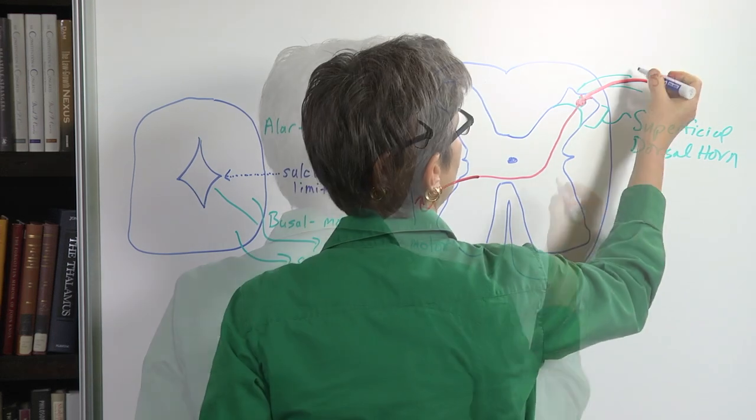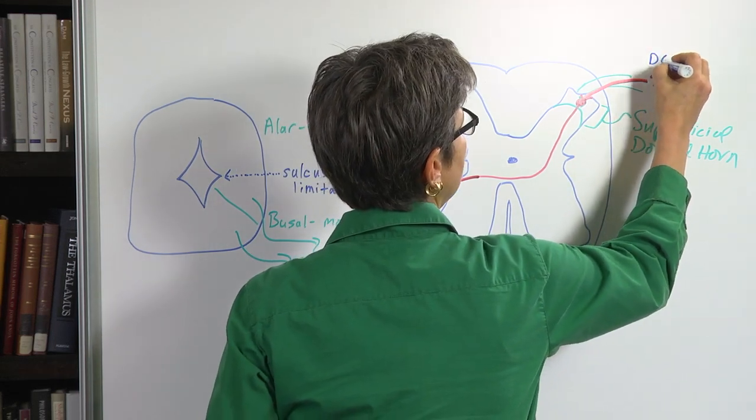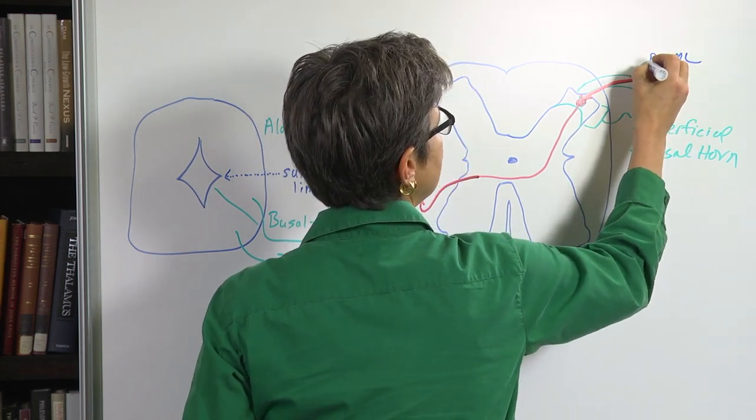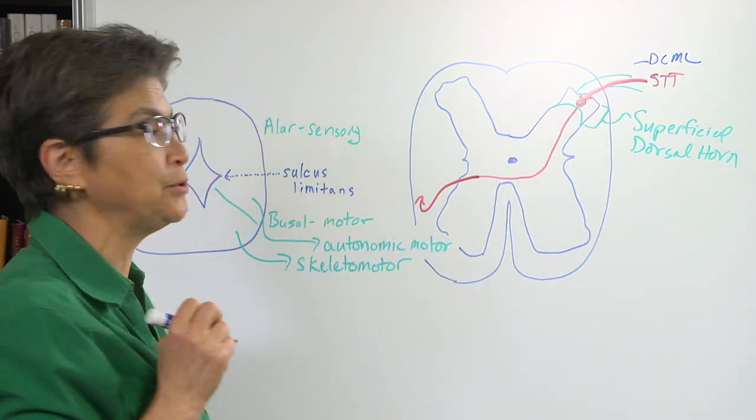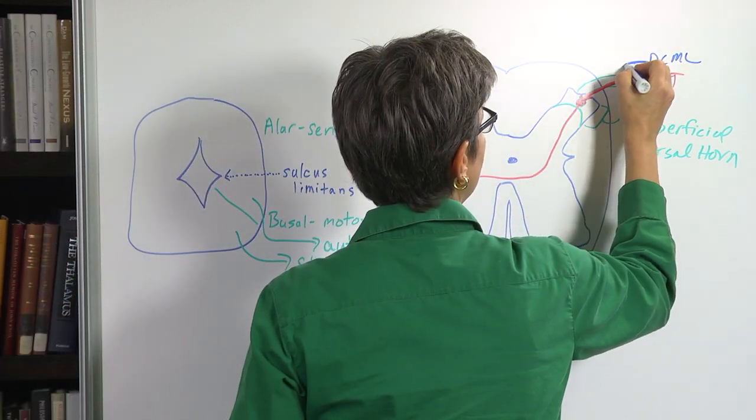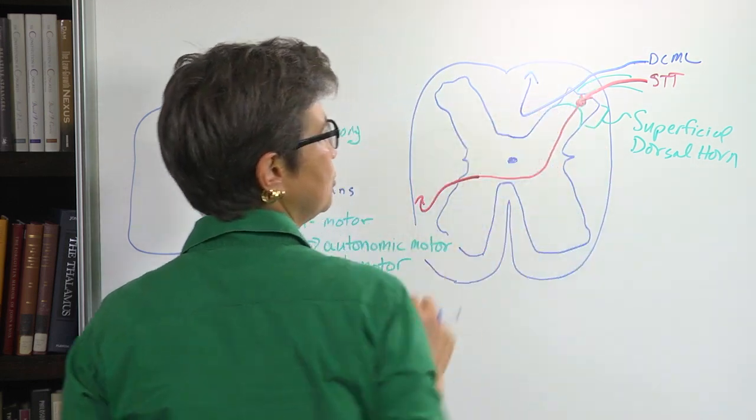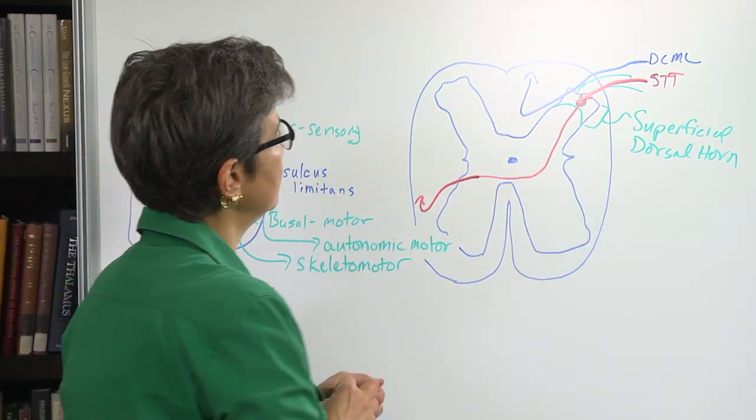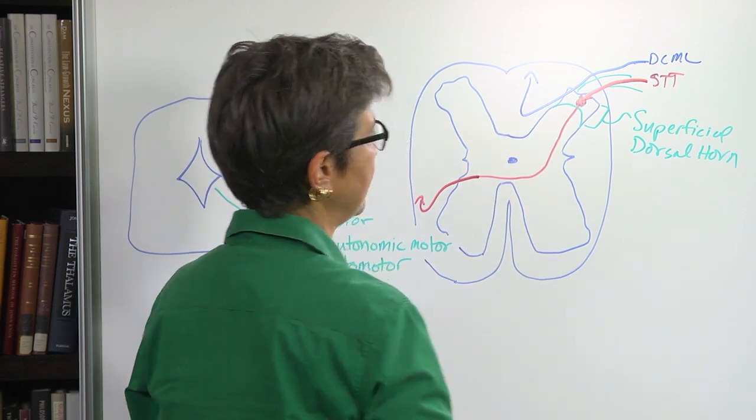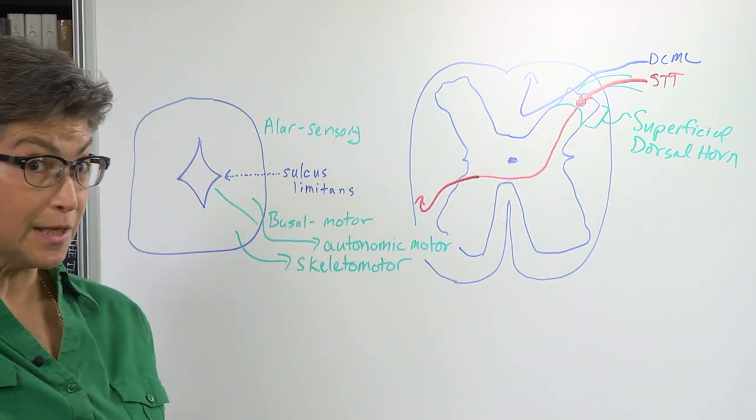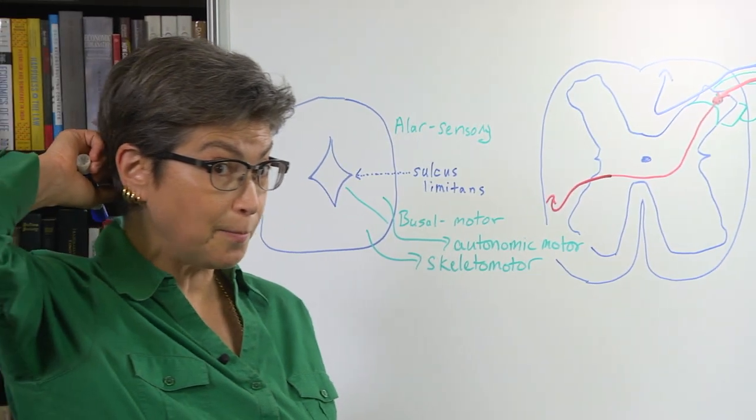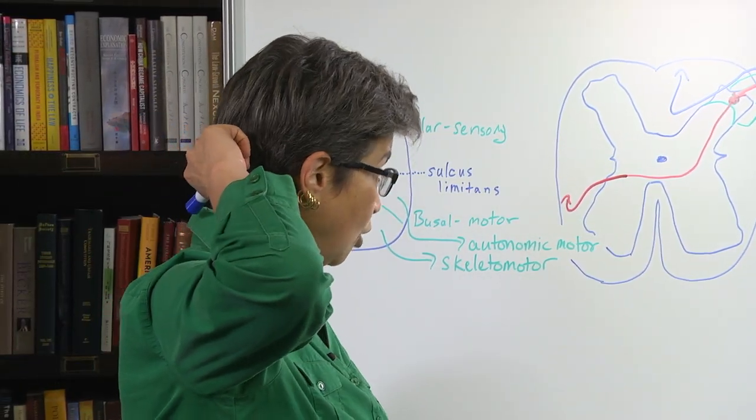Okay, so the dorsal column medial lemniscus pathway. This is light touch, vibration, proprioception information. It's going to come in and it's going to go up these dorsal columns. The dorsal columns are going to carry this information all the way up to the back, to the caudal medulla.